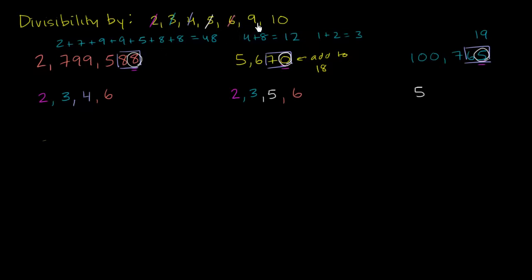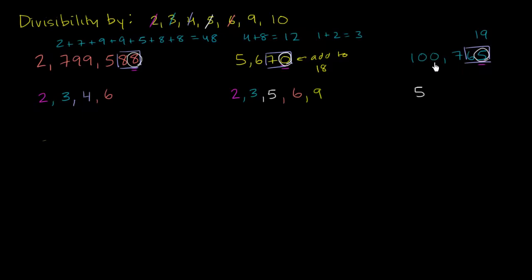Now the test for 9, which is very similar to the test for 3: sum up all the digits, and if that sum is divisible by 9, then the number is divisible by 9. We already summed the digits of the first number and got 48. 48 is not divisible by 9 — adding those digits gives 12, which is definitely not divisible by 9. So the first number is not divisible by 9. For the second number, the digits summed to 18, which is divisible by 9, so it is divisible by 9. For the third number, we already know it's not divisible by 3, so it can't be divisible by 9 either — and the digit sum of 19 confirms it's not divisible by 9.